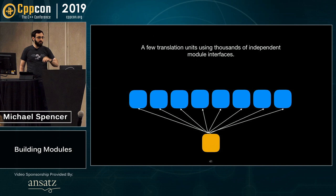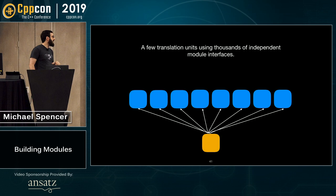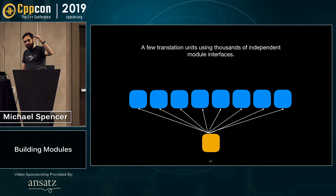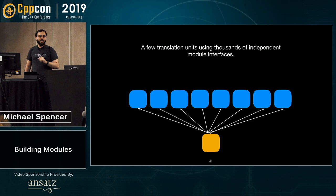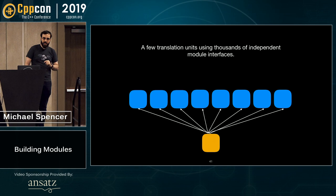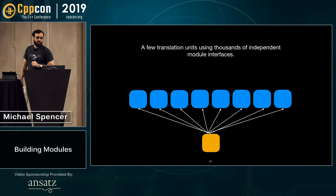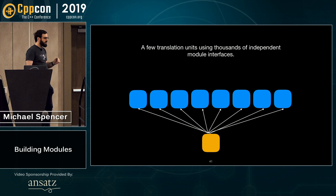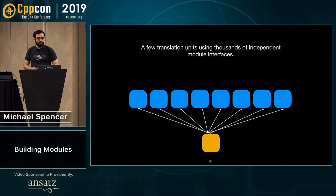Here we have a build graph: at the bottom is a single translation unit that depends on N things. In the header world with a single translation unit, it doesn't matter how much parallelism your build environment has — you have a max parallelism of one, a completely serialized build. In the modules world, you have as much parallelism as your build environment has. There is a cost on the thing importing all of these, but that cost is very small — on the order of the number of entities you use from those modules, not the size of the modules.